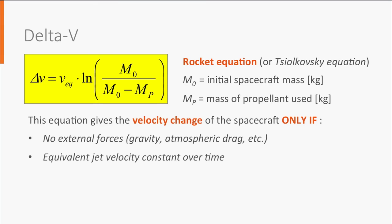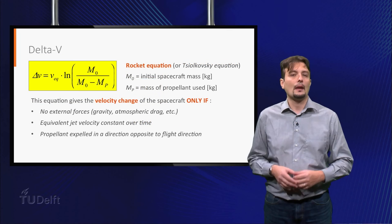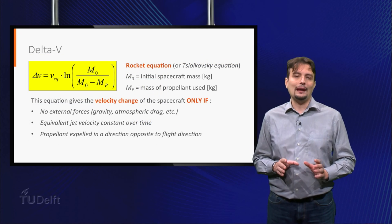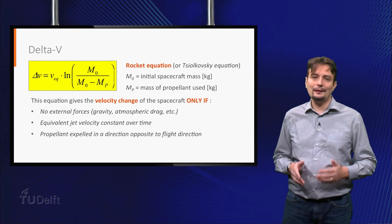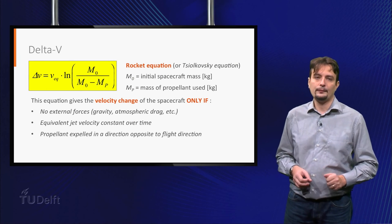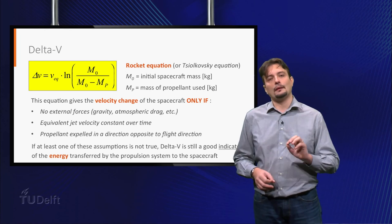Second, the equivalent jet velocity shall be constant over time. Finally, the propellant shall be expelled in a direction exactly opposite to the flight direction. You can easily imagine that, in many practical cases, these assumptions are not all true. When at least one of them is not met, then the delta V, calculated by means of the rocket equation, is not anymore the actual velocity change of the spacecraft.